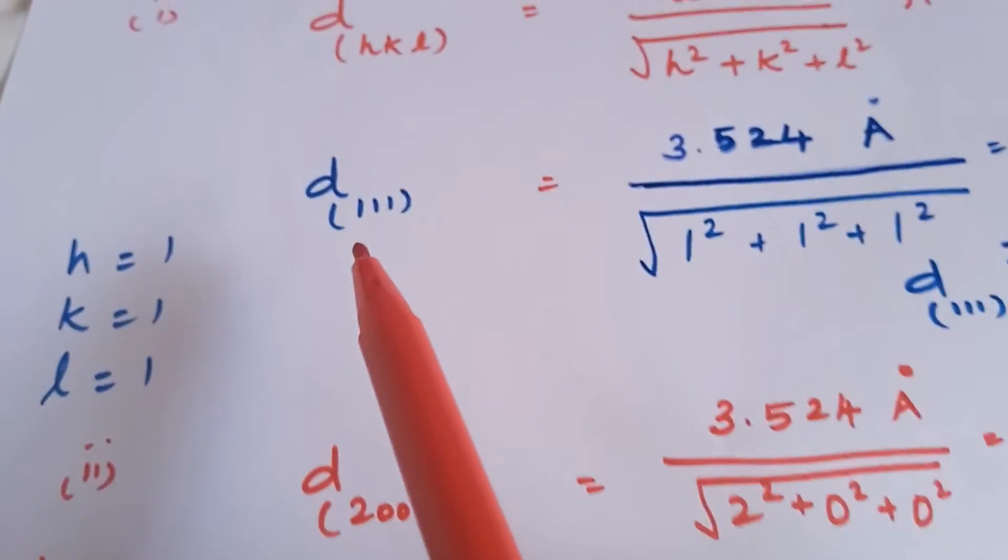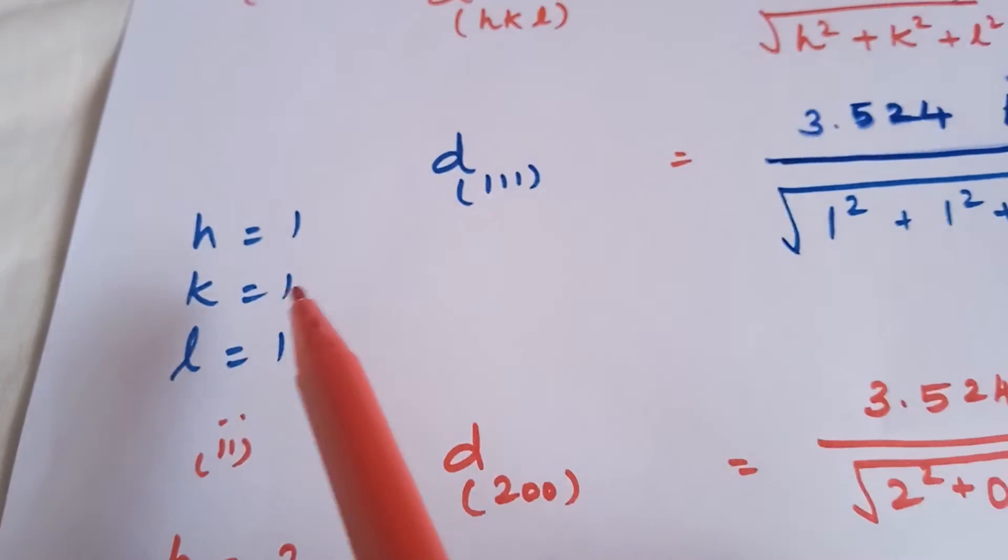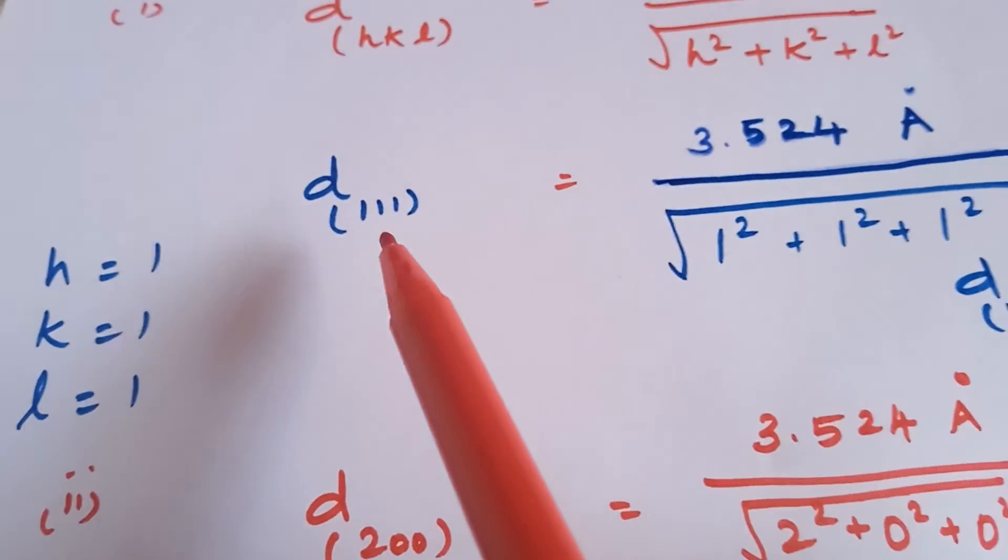So, for the first plane d111 the hkl values are given as 111. Substituting it in the formula,